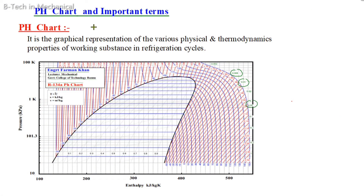So let's look at the PH chart and see the definition: it is a graphical representation of the various physical and thermodynamic properties of working substances in a refrigeration cycle. From a refrigeration and air conditioning point of view, it is the chart in which the physical and thermodynamic properties of the refrigeration cycle's working substances are represented graphically.